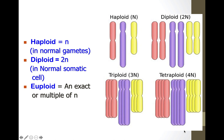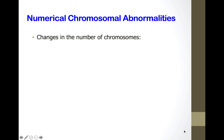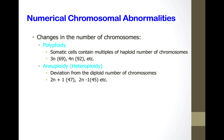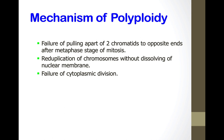Recall that haploid is n, diploid is 2n, and euploid is the exact number of multiples of n. Numerical chromosomal abnormalities are changes in the number of chromosomes. Polyploidy is when somatic cells contain multiples of the haploid number — 3n, 4n — seen in certain germ cell tumors. Aneuploidy, or heteroploidy, is deviation from the diploid number, such as 2n+1 giving 47 chromosomes, or 2n−1 giving 45.